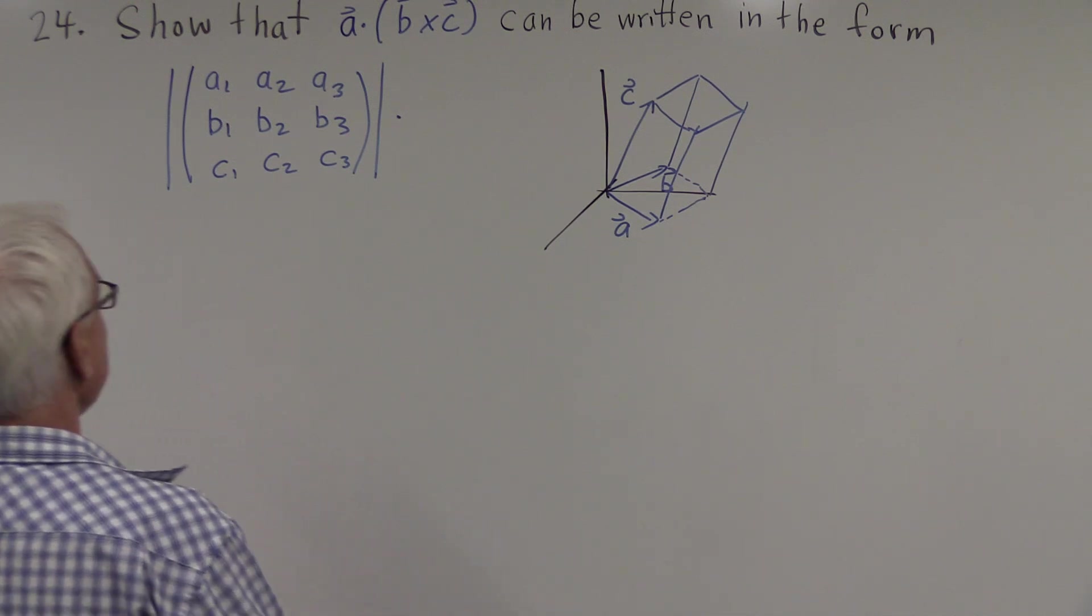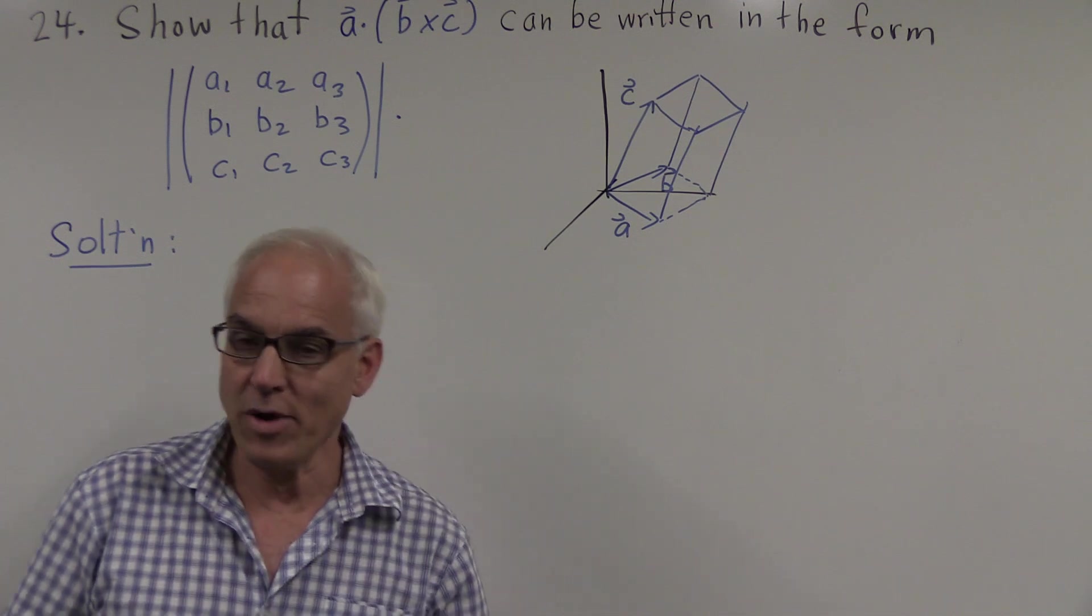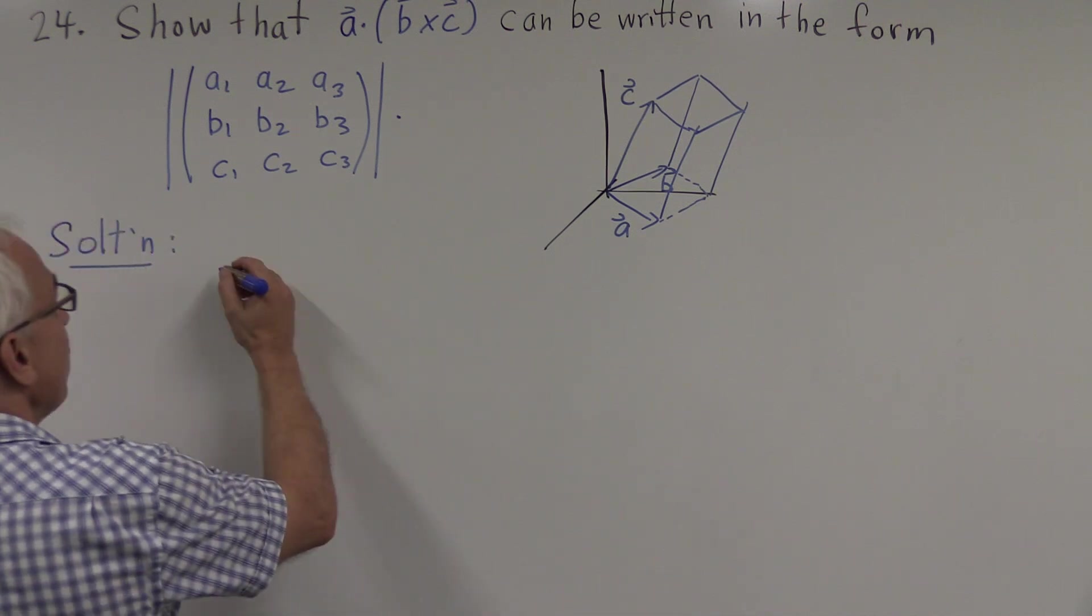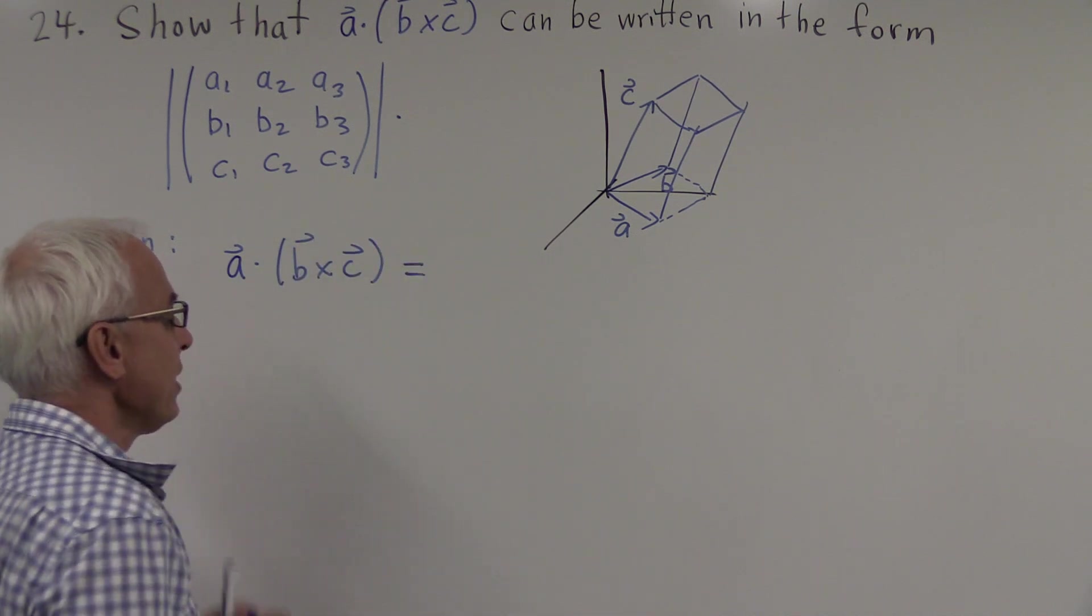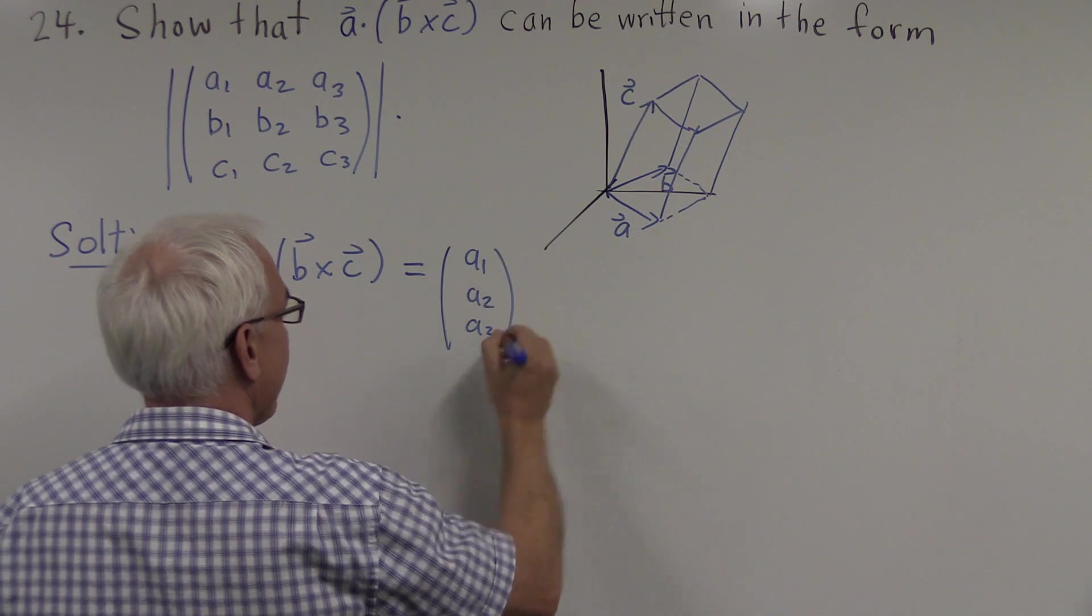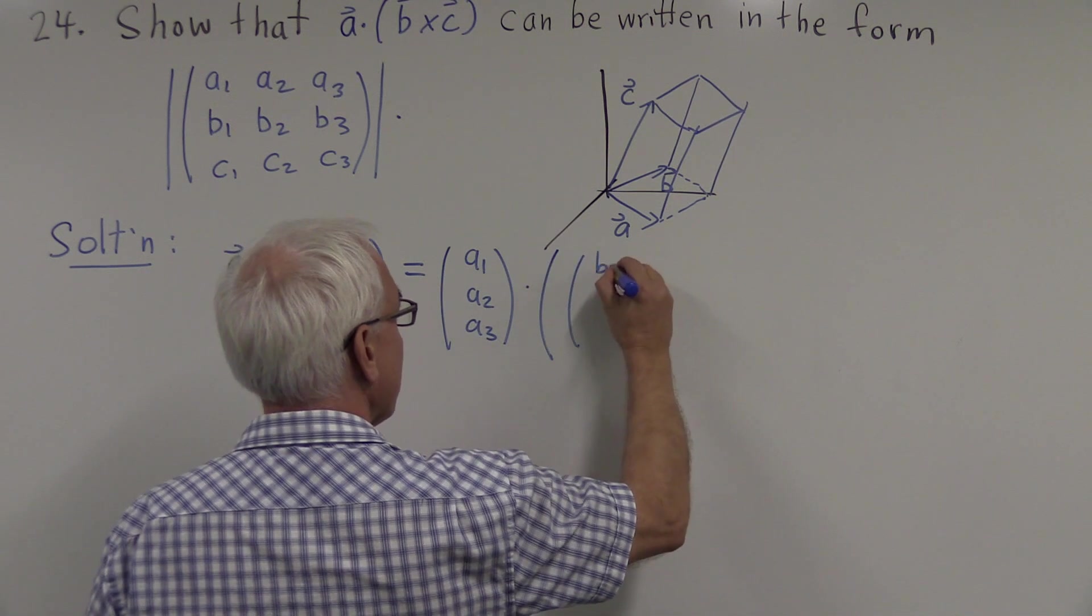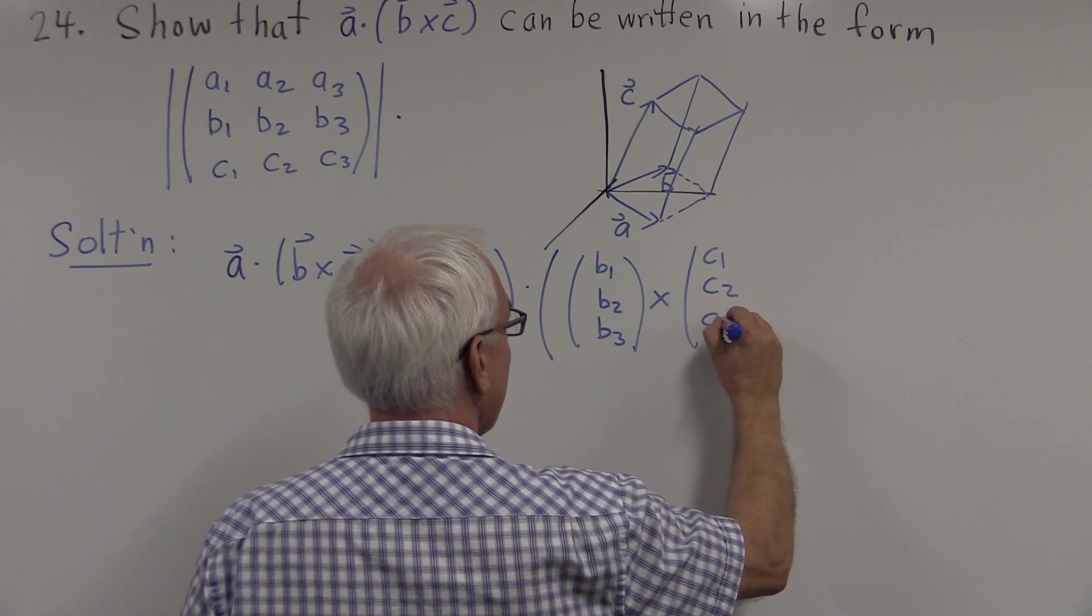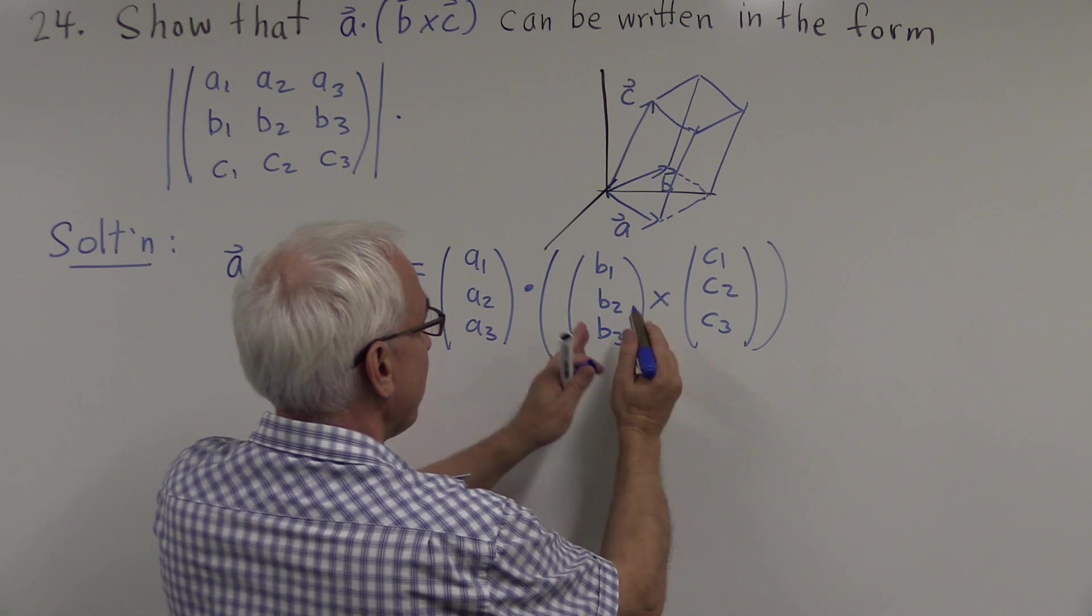Okay, so how do we solve this problem? Well, one way of doing it, perhaps the simplest, is just to expand things out. So let's have a look at what a dot b cross c is. So a is the vector, I'll write in column vector a1, a2, a3, and I'll write b cross c as the cross product of b1, b2, b3, and c1, c2, c3. So we have the vector a, and we're dotting it with the cross product between vector b and vector c.